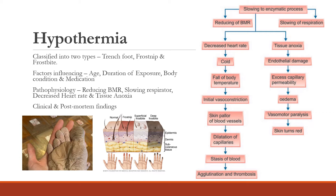Maintenance of normal temperature is a delicate balance between heat load and heat loss. Heat load is the sum of heat generated by oxidation of metabolic products and heat acquired from the environment. Heat loss occurs via three types: conduction, radiation, and evaporation. In evaporation, there are two subtypes — insensible heat loss and sweating.